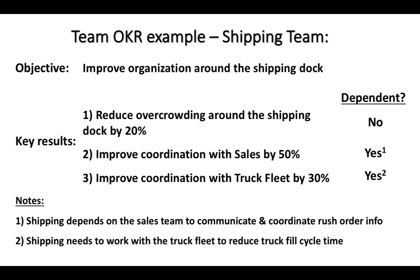Note 1 states that the shipping team depends on the sales team to communicate and coordinate rush order information — we can infer that the organization around the shipping dock is somehow linked to that. The second note states that the shipping team needs to work with the truck fleet to reduce truck fill cycle time. At this point, let's assume that all of the teams have laid out their OKRs and have indicated dependency with some detail around the particulars of the dependency.